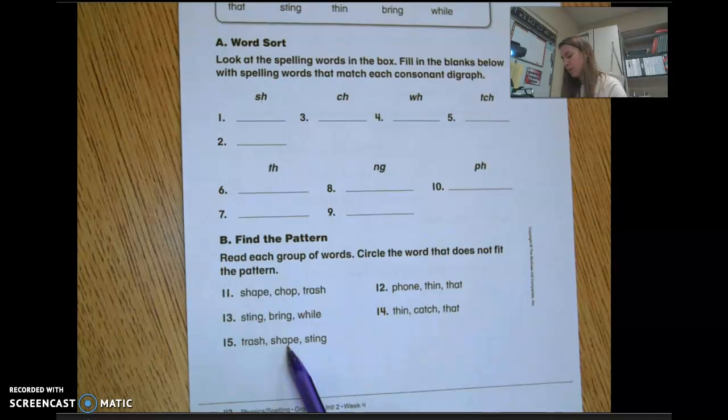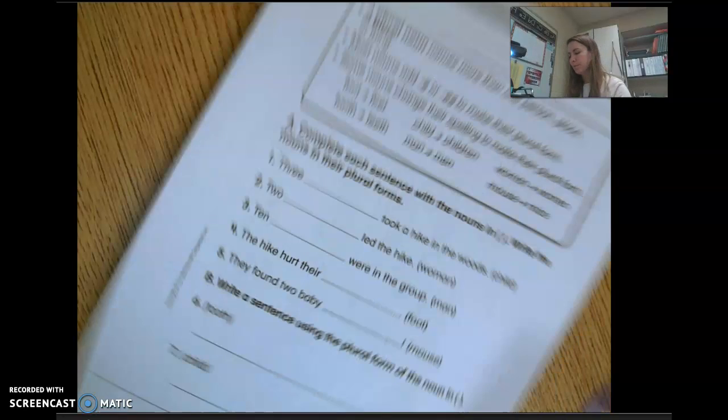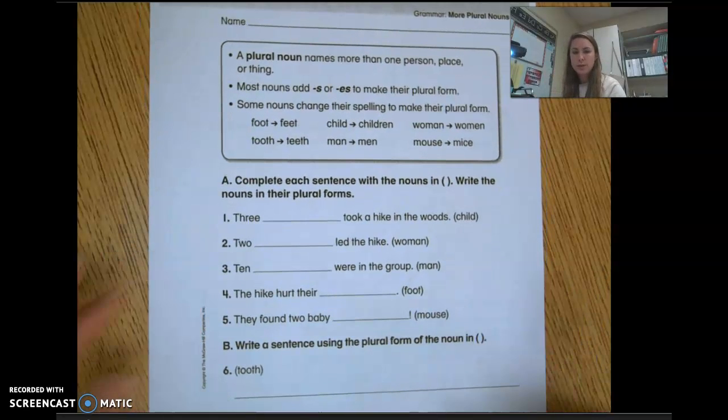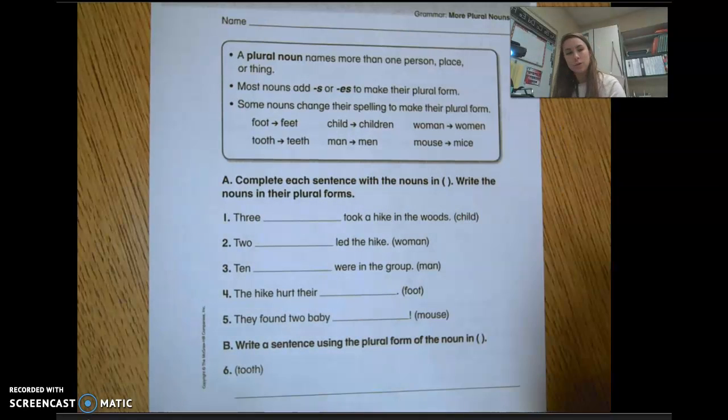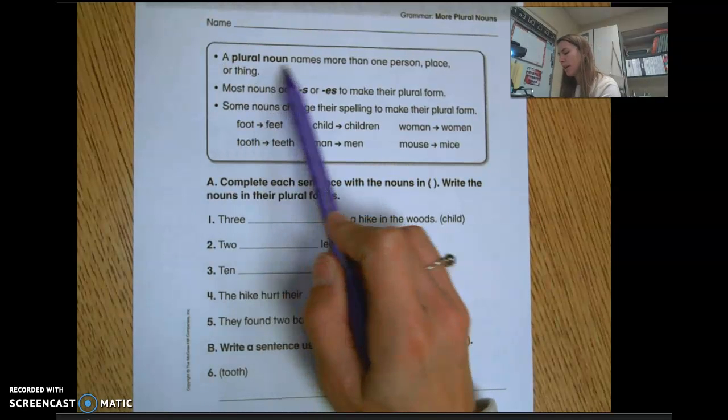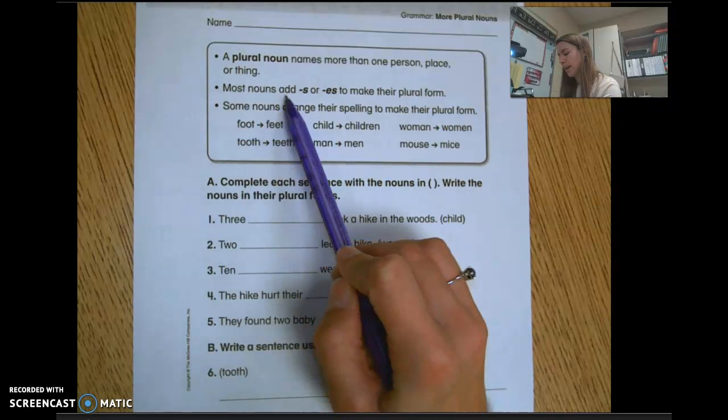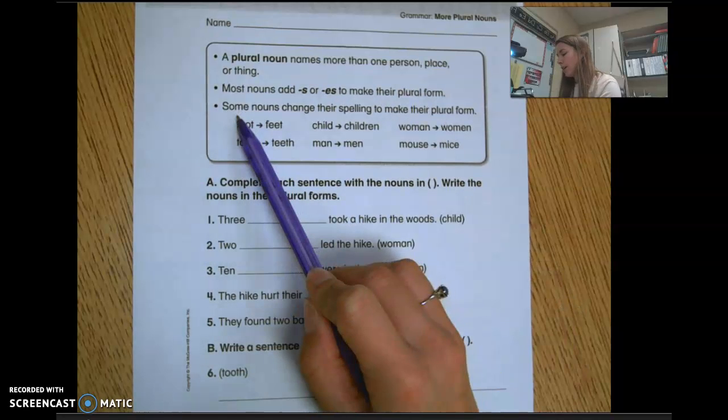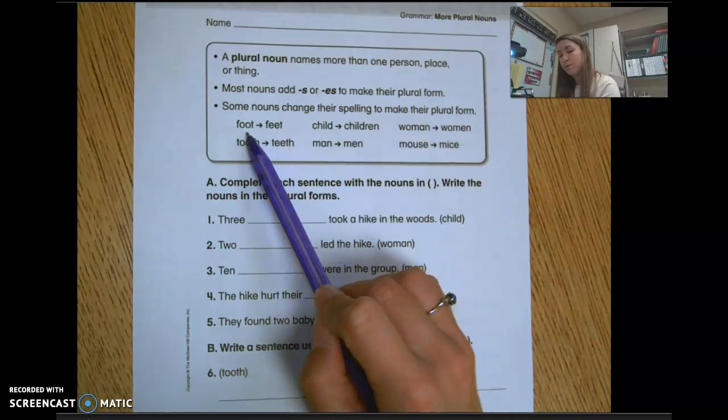On the backside, we're working more with plural nouns and some different kinds of rules to make a word plural, focusing on nouns - person, place, or thing. A plural noun names more than one person, place, or thing.